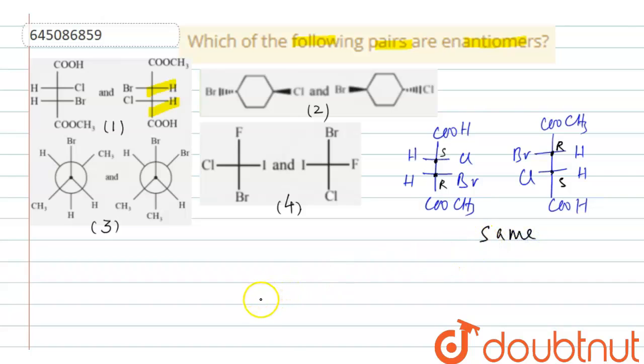Then the second one, we will see. The second one is a planar compound which is having a plane of symmetry. Therefore, they cannot be enantiomers. The plane of symmetry is like this. This is the plane of symmetry.